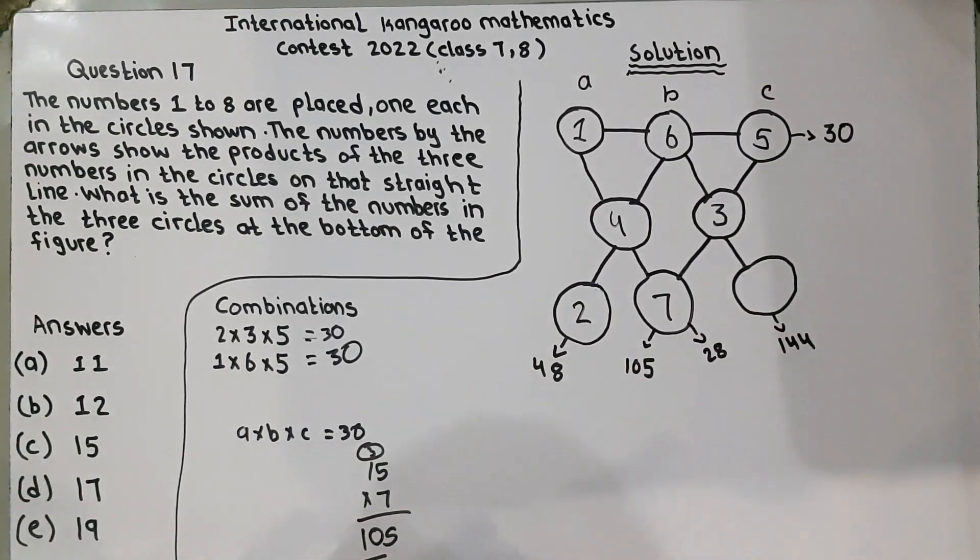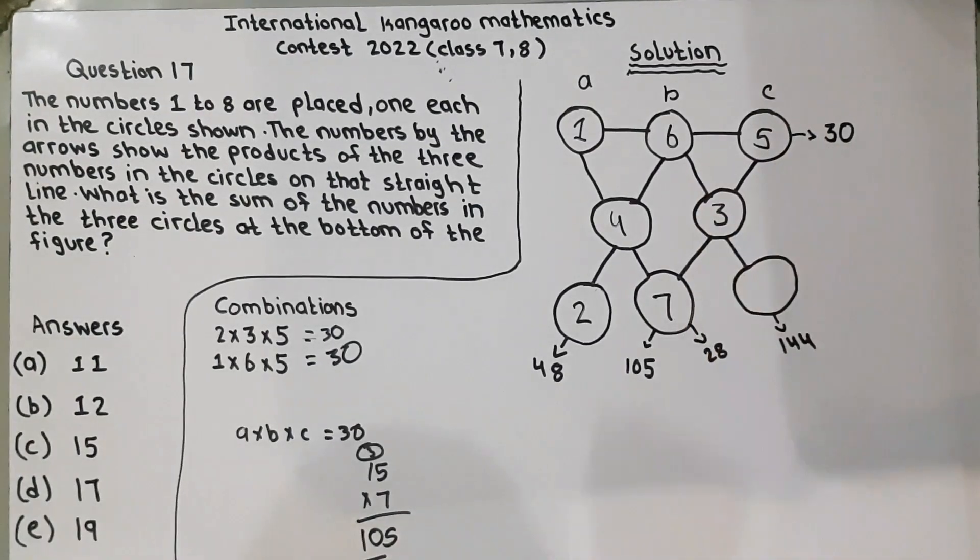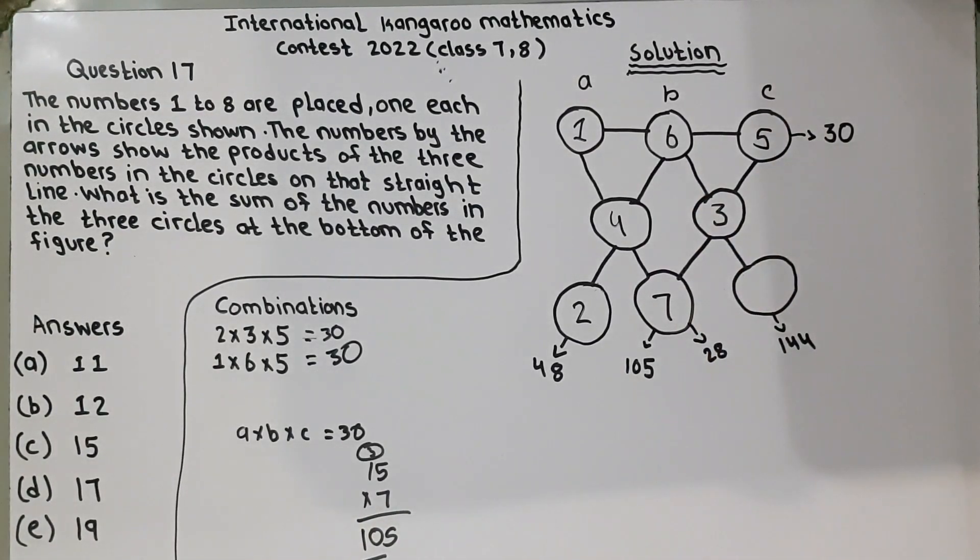Now, we have to think that what will come here. 6 times 3 is 18. 18 multiplied by which number is equal to 144? 18 times 5 is equal to, no, no. Let's check 18 times 6.